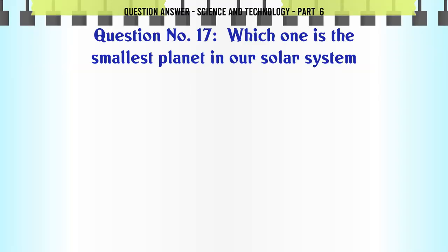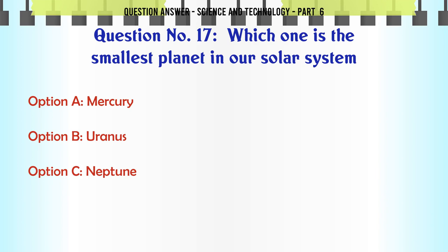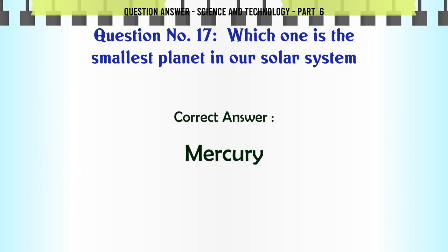Which one is the smallest planet in our solar system? A. Mercury. B. Uranus. C. Neptune. D. Saturn. The correct answer is Mercury.